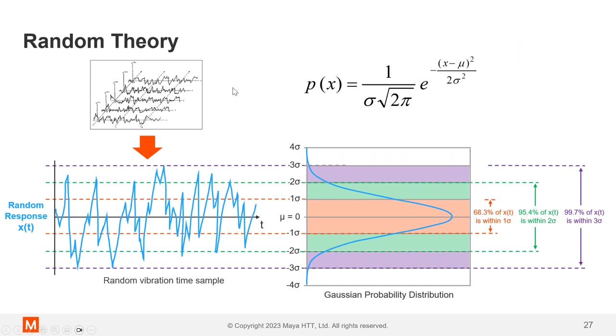Now, random theory a little bit here. So again, we're talking about taking samples of data and we have basically a random response. So we'll take a time history. This is your amplitude, your acceleration over time. And what we're doing when we're coming up with random inputs are basically counting instances above certain limits and creating a Gaussian probability distribution.